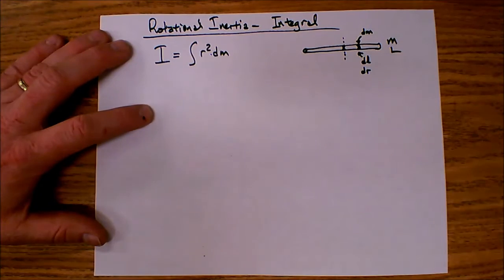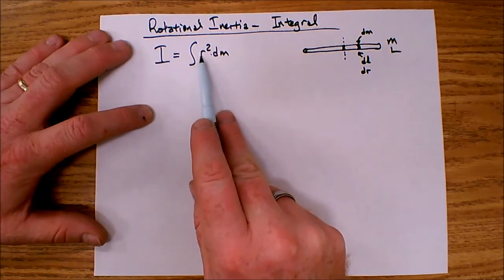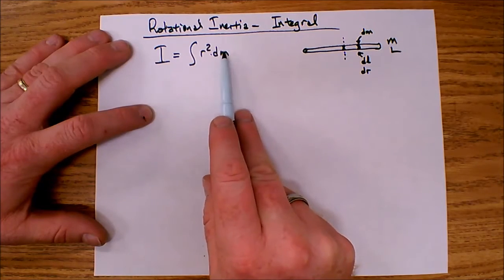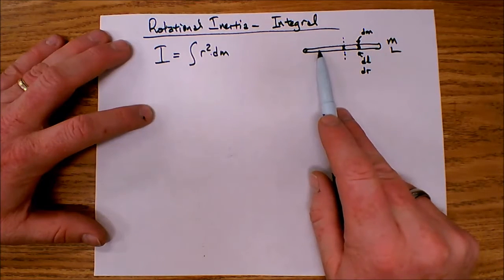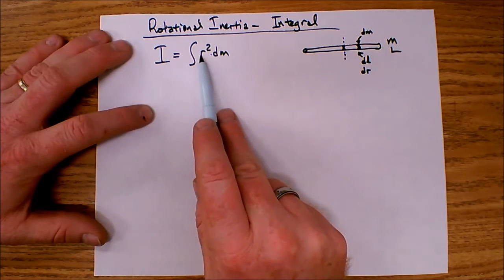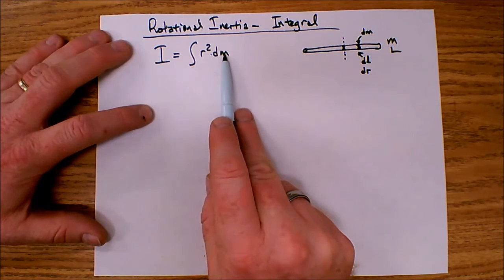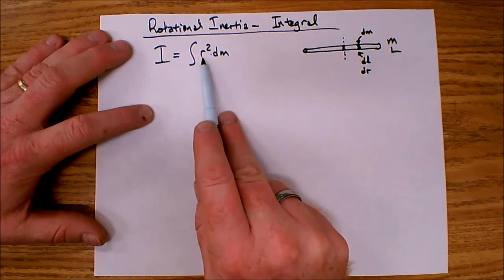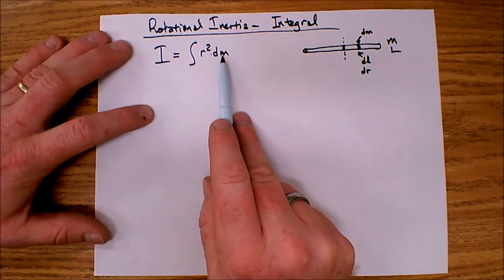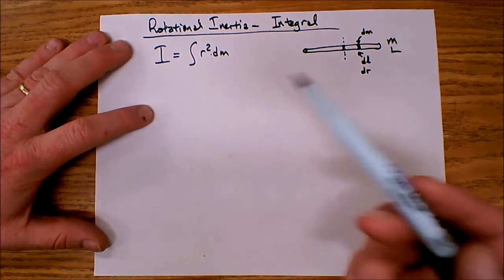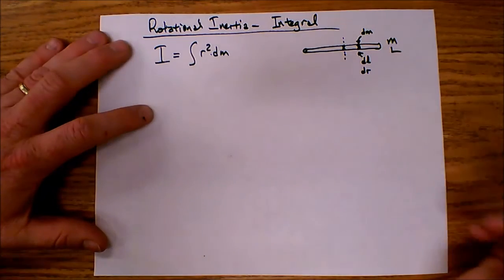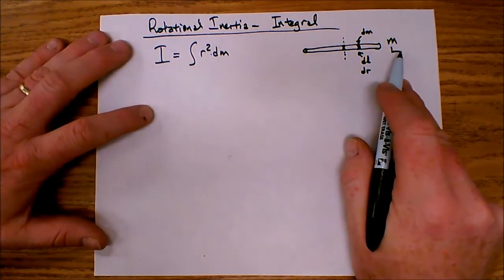So I've run into a slight difficulty here with this integral because I have the integral of r-squared dm. In this case the r is not constant. Each little slice has its own unique r. But how do I integrate r with respect to mass? Well you can't really integrate position with respect to mass. So what we need to do is find a relationship between the mass and the position.